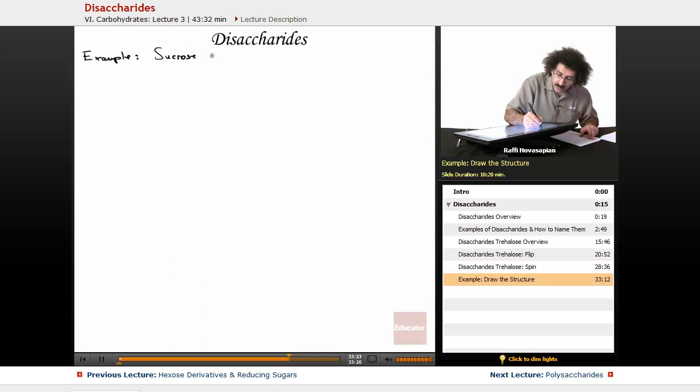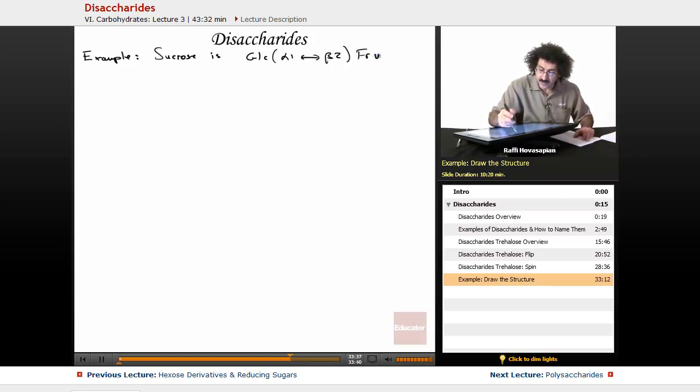Okay, sucrose, which is table sugar, is GLC alpha-1, beta-2, FRU. So sucrose is a disaccharide, and it is made up of a glucose unit and a fructose monomer.